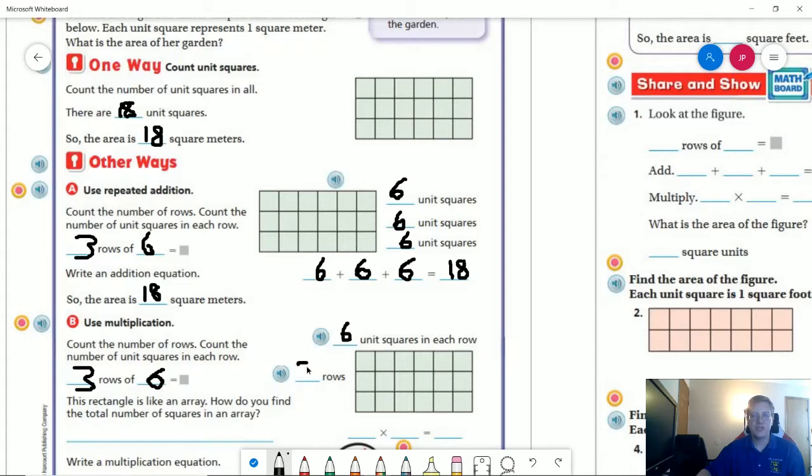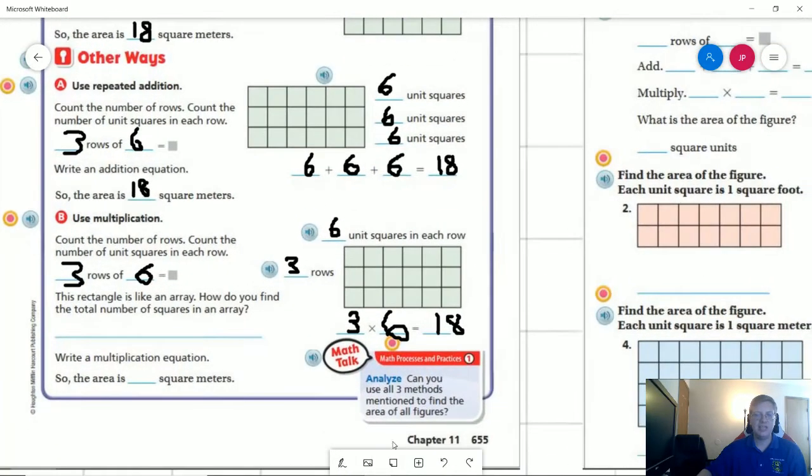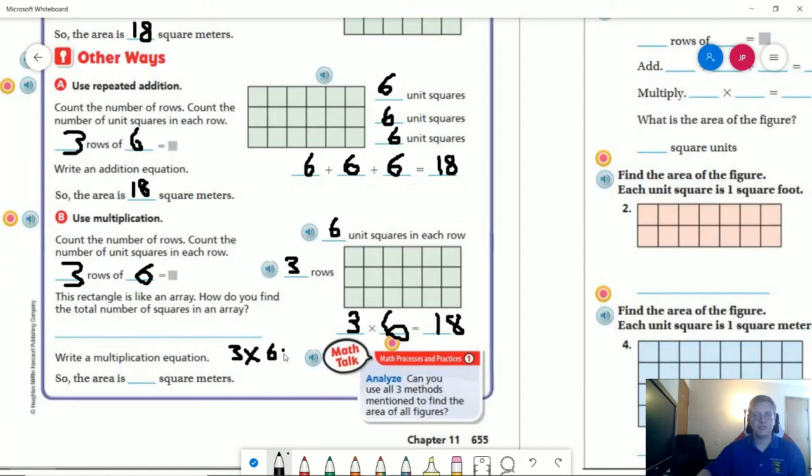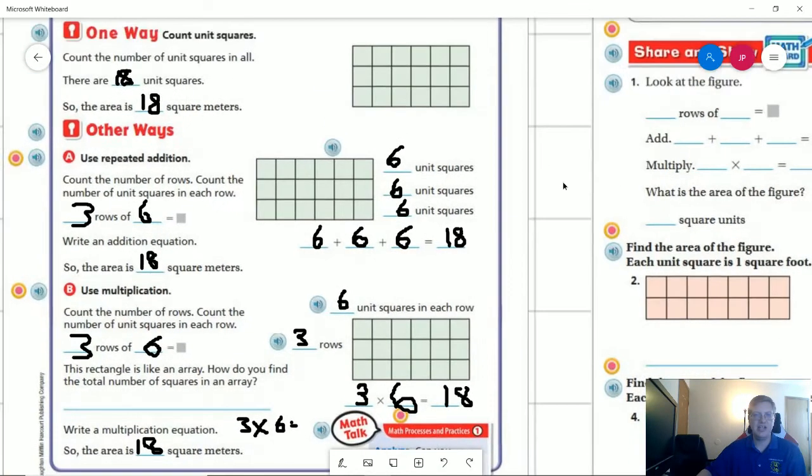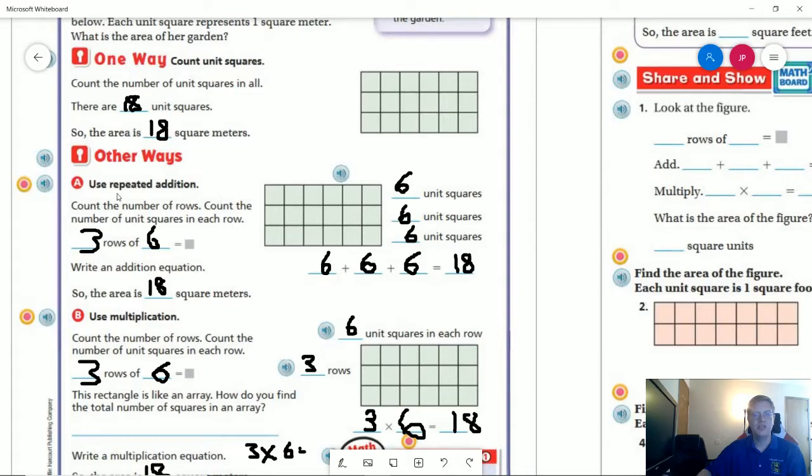And then repeated addition and multiplication use the same idea. We are going to have three rows of six. But instead of doing six, 12, 18, we are just going to multiply the numbers. So we have the six here and then we have a three here, and we multiply those together to also get 18.